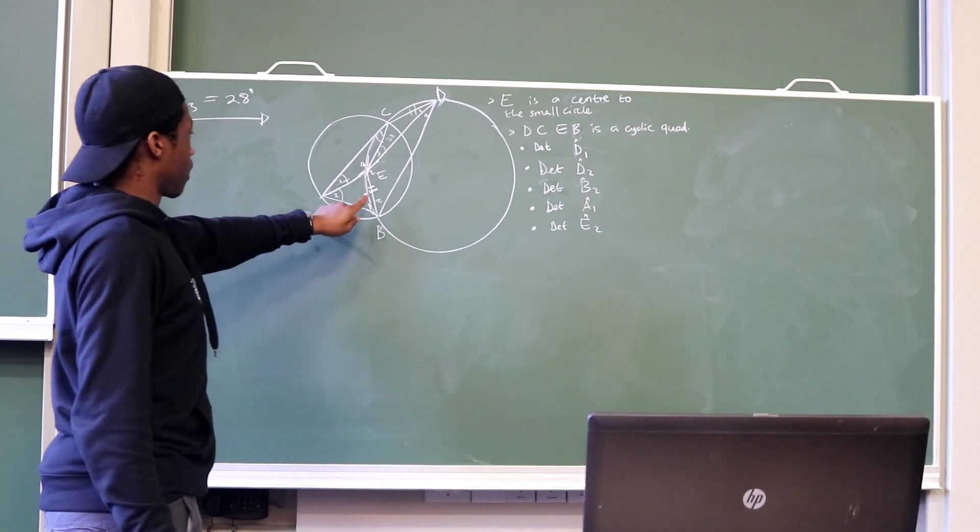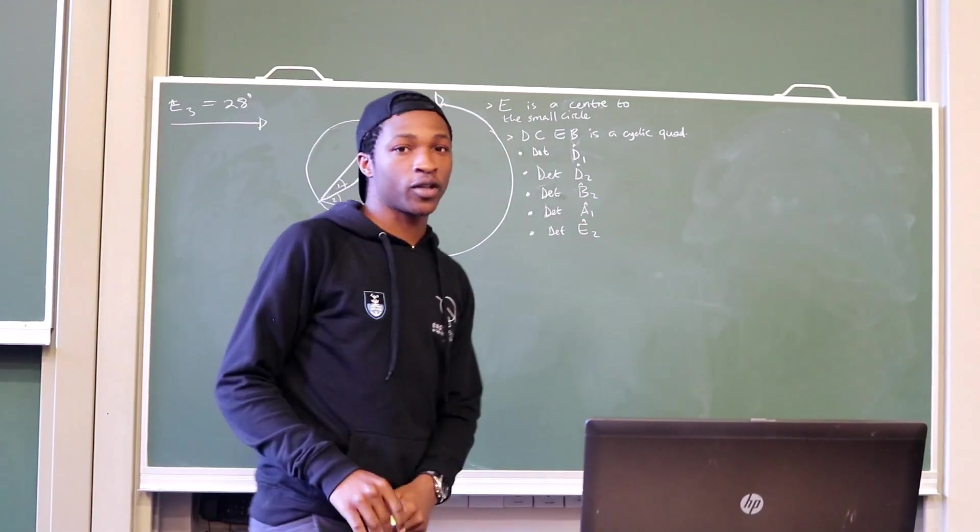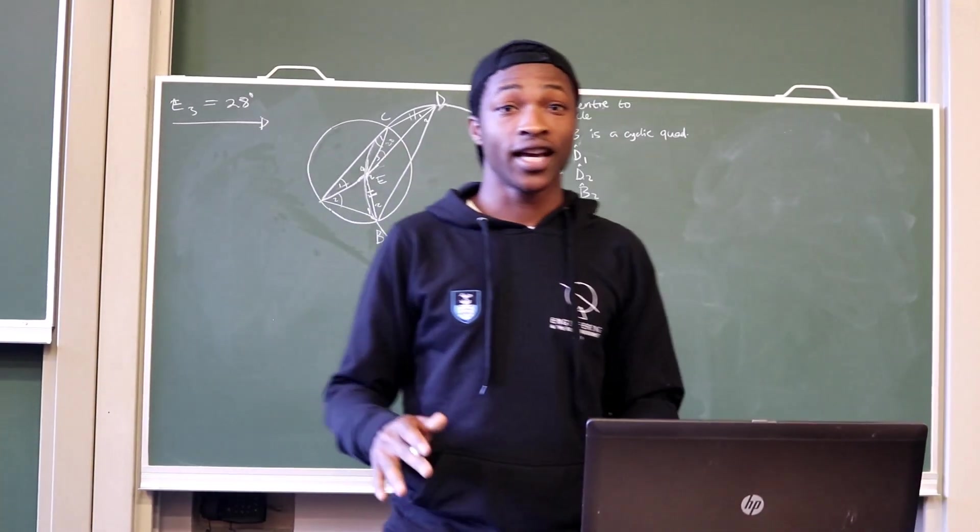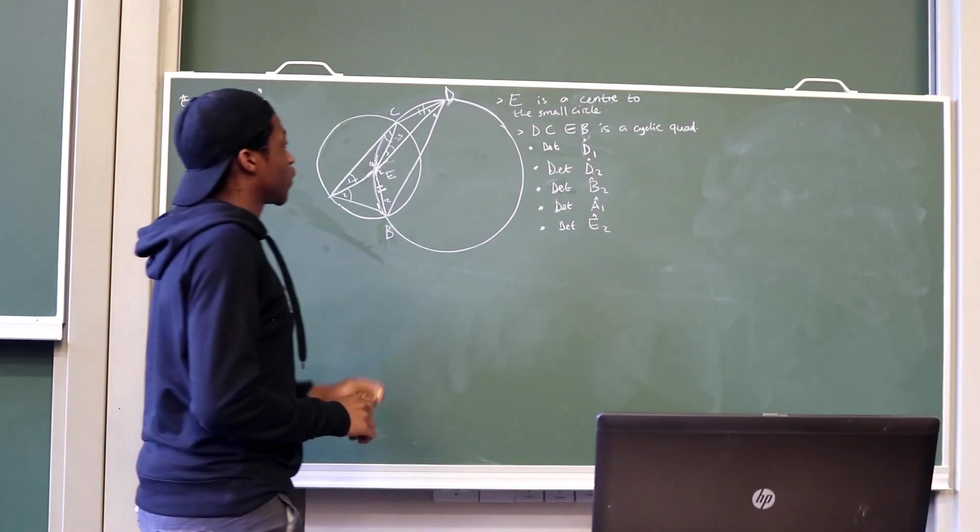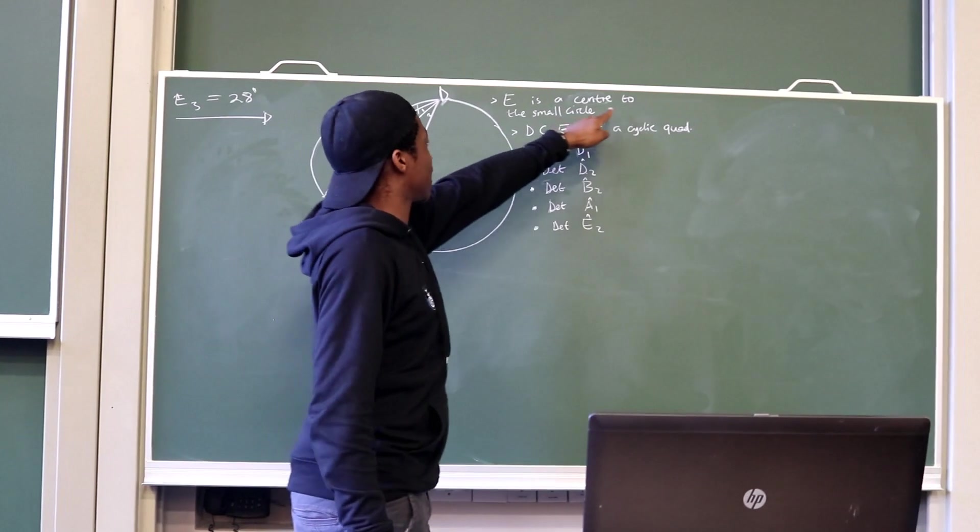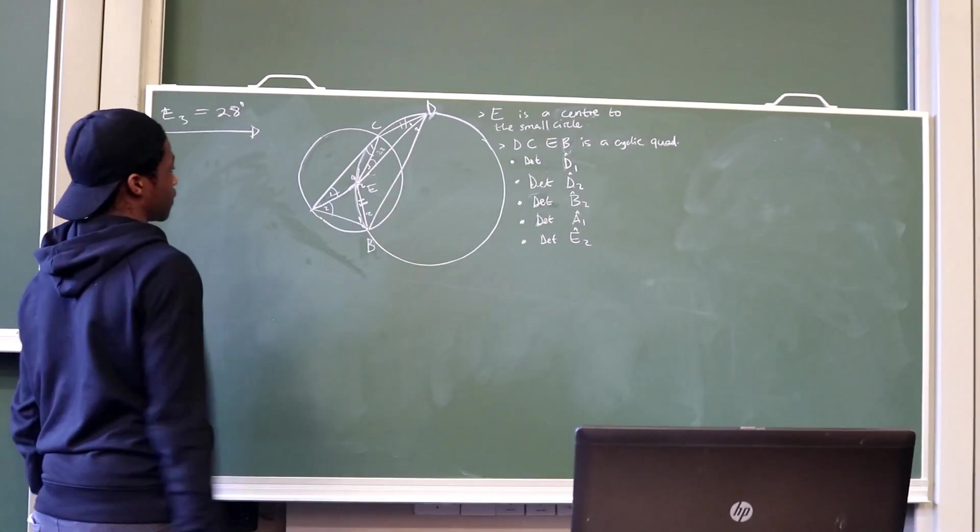Okay, with this one, first of all, you need to read a statement. I didn't write a statement for you here, but you must make sure that you read the statement and really understand it. From the statement, we are told that E is the center to the small circle, which means E is the center of this circle.